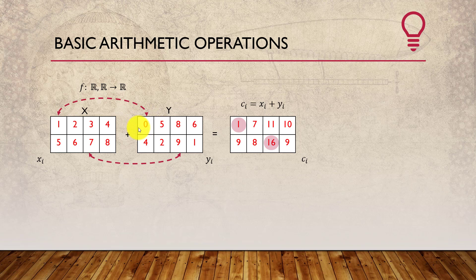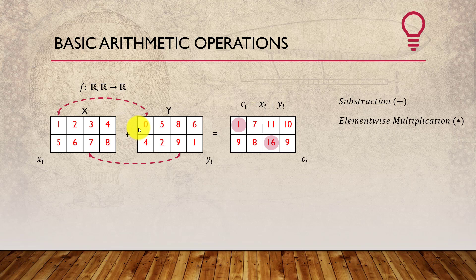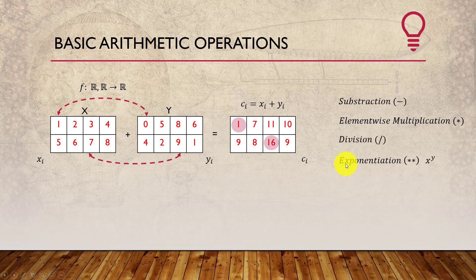Similar to summation, we can also do element-wise subtraction and multiplication. This is important: when we talk about matrices or tensors, there are two types of multiplication. One is element-wise multiplication, like what we've seen for summation. There is another concept called matrix multiplication, which we will see later — it is completely different from element-wise multiplication. We can also do division and exponentiation, like x to the power y, for example 1 to the power 0, or 2 to the power 5.